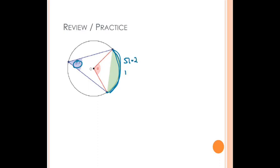Let's do our next practice problem. We have a 51-degree angle and we're trying to find the measure of the central angle that intercepts the same arc. This is a simple two-step problem: if this angle is 51 degrees, the arc that it intercepts would be 51 times 2, or 102 degrees. And we learned that the central angle has the same measure as the arc that it intercepts, so that would be 102 degrees as well.